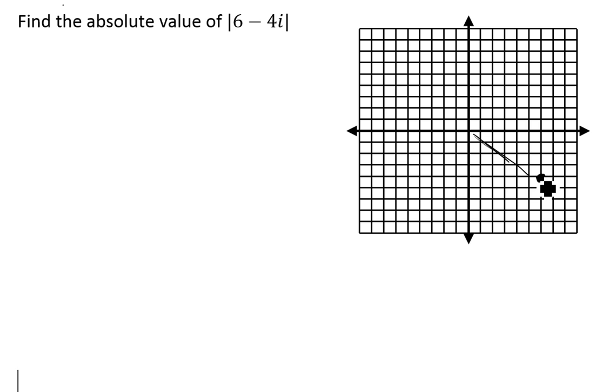This line represents the distance - the length of this line represents the absolute value. If I think about it, this is just a right triangle. I've got one leg here, the right angle, and another leg. The length of these sides is 4 units and 6 units. The absolute value is just the length of this hypotenuse.